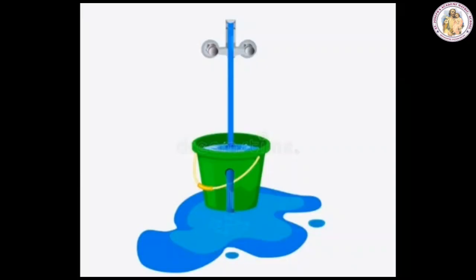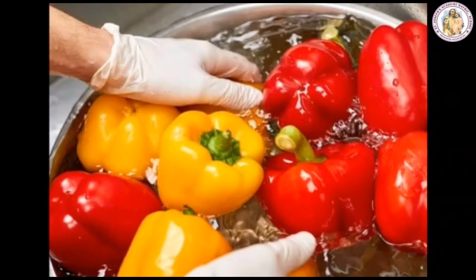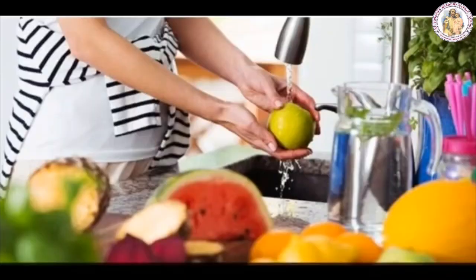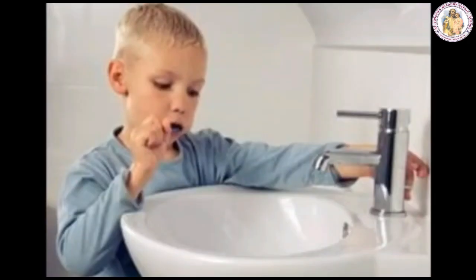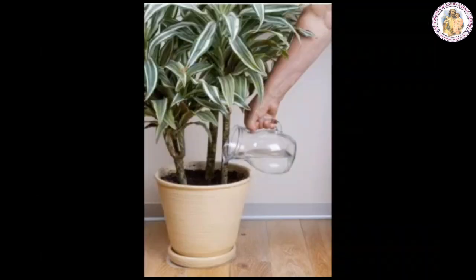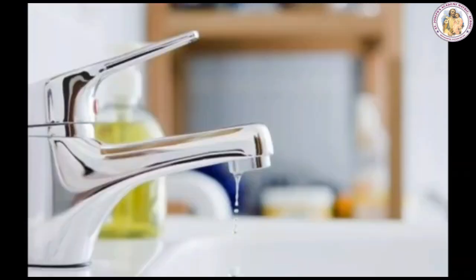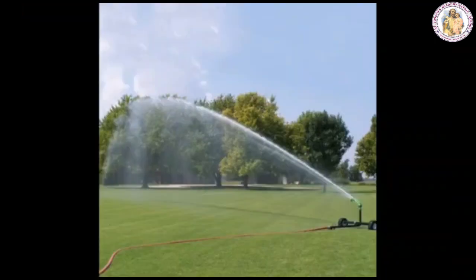Never allow water to overflow from buckets. Wash fruits and vegetables in a bowl of water and not under running tap water. Always close the taps while brushing the teeth. Use leftover water in your water bottle to water a potted plant. Turn off the tap after each use. Use a sprinkler to water the garden.